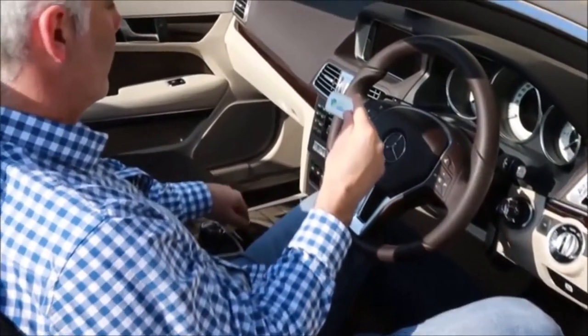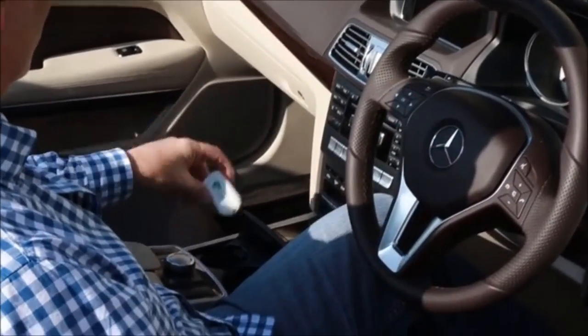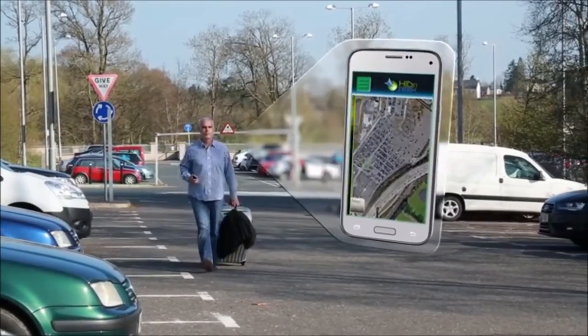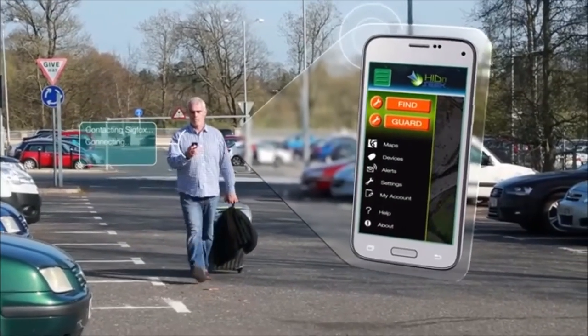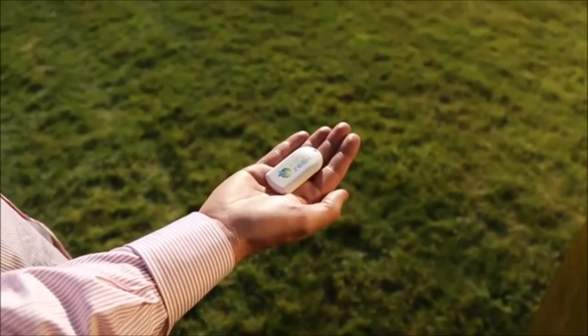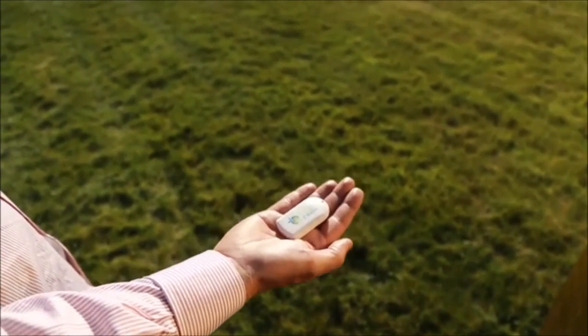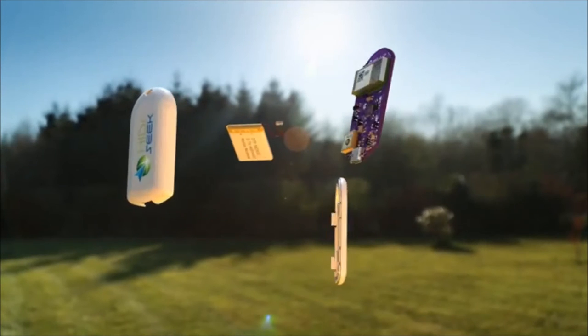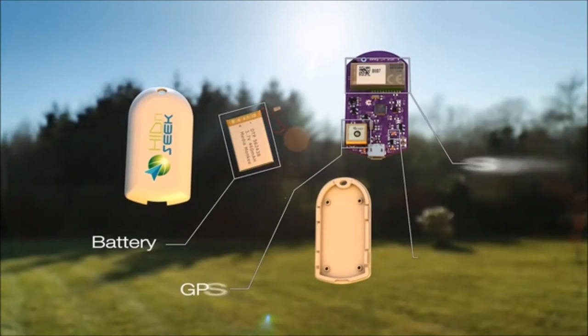Put Hide and Seek in your car before you go on vacation for peace of mind, and to help you find it easily upon your return. Just open the app, tap Find me, and you'll be guided right to it. Hide and Seek is a small, lightweight, and rechargeable tracker, stuffed with technology to help you track and find your things.